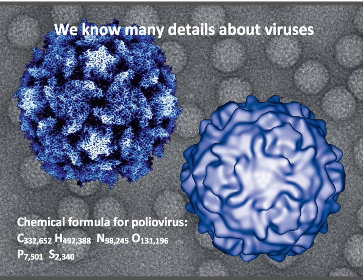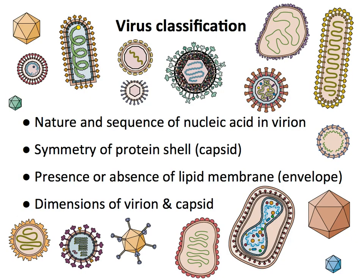We know an enormous amount about viruses and there are lots of them. To organize what we know, we classify viruses — and this will come up a lot in this course. Viruses are classified based on: the nucleic acid in the virion (this is primary); the symmetry of the protein shell, which falls into really one of three different shapes; the presence or absence of a lipid membrane — some viruses are naked while others have a lipid envelope; and the dimensions of the virus particle or capsid.